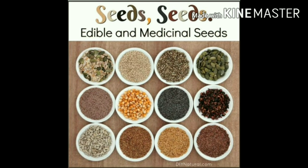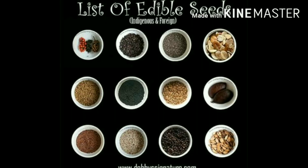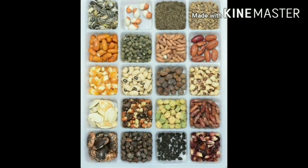For stem: amaranthus, carcassia, sugarcane. For flower: moringa, onion, cauliflower. Dear students, you can reach all.